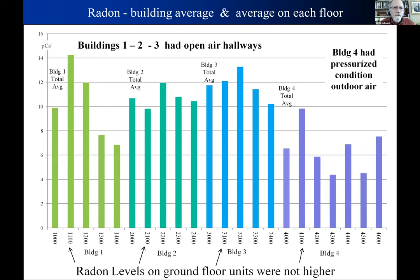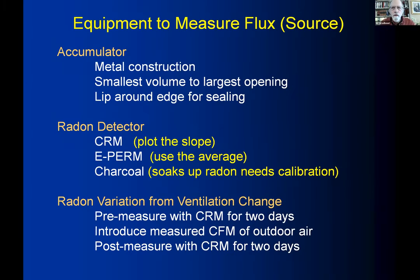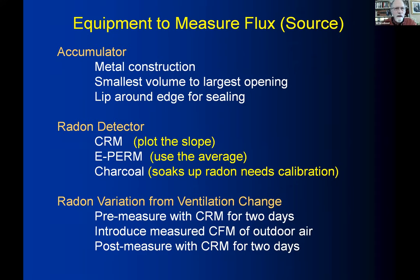To determine whether radon is coming from concrete, you can use an accumulator: place a metal bowl over a radon monitor, seal it to the floor, and watch the radon ingrowth. Charcoal canisters cannot be used because they absorb radon; E-perms and continuous monitors work. You can also do a flux test on bare concrete in a stairwell or utility room. This approach can be applied in basement floors as well.